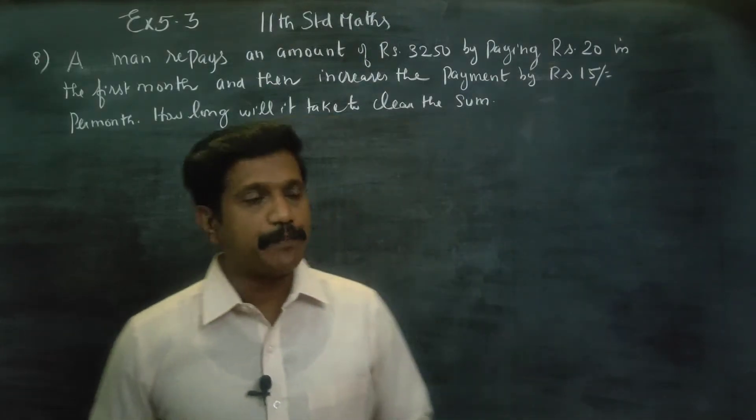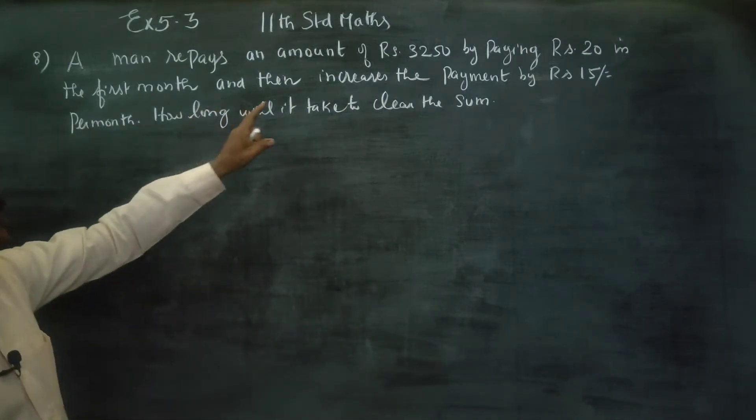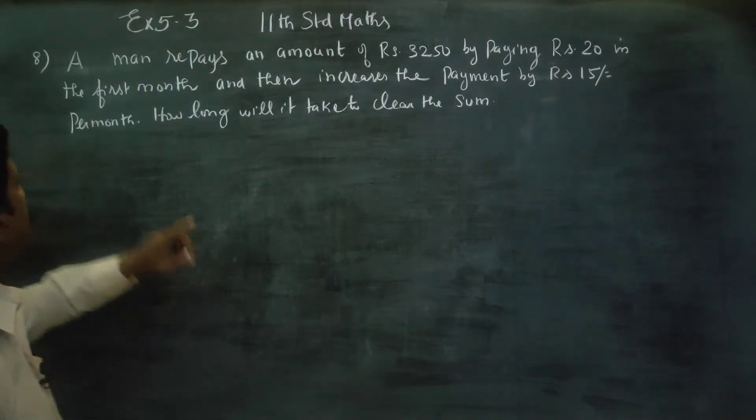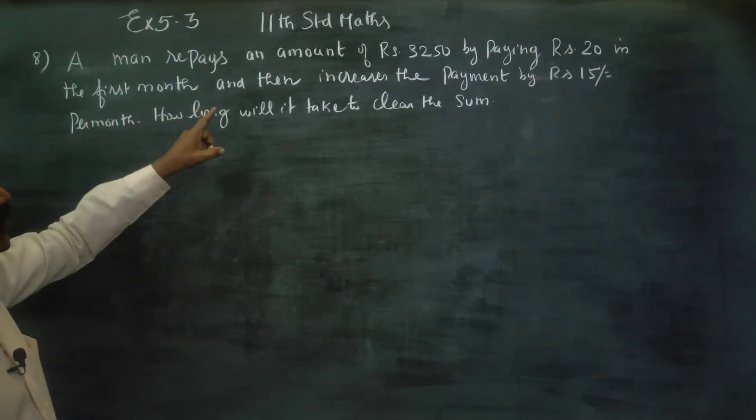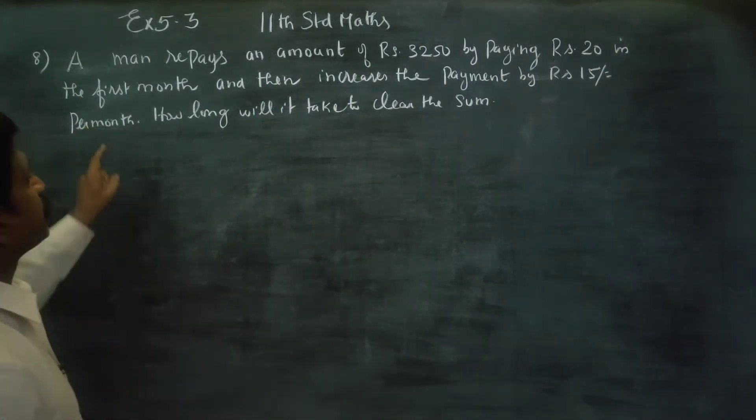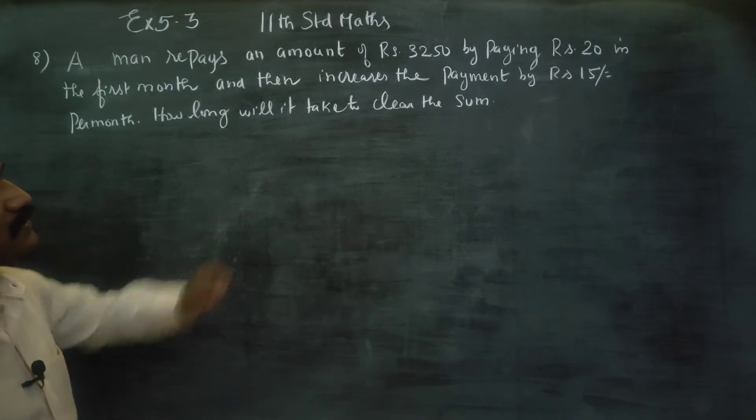A man repays an amount of rupees 3,250 by paying rupees 20 in the first month and then increases the payment by rupees 15 per month. How long will it take to clear the sum?